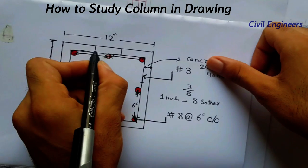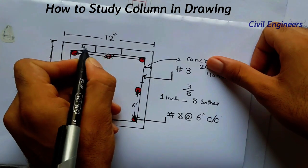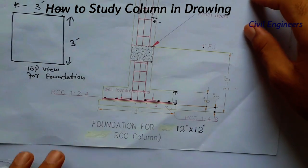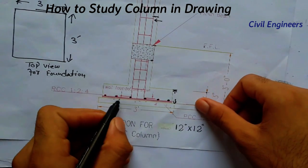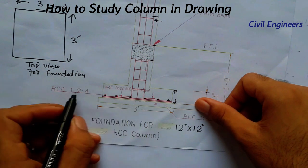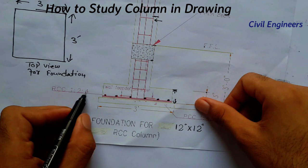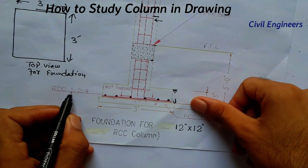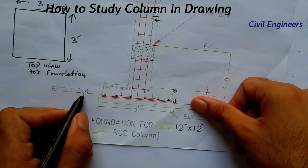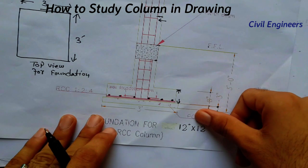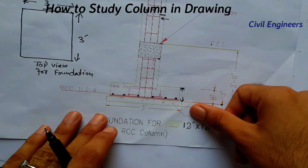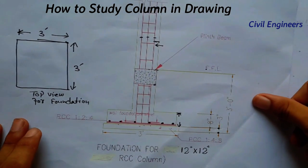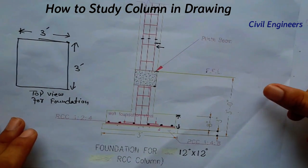In this section we also have RCC 1:2:4, which means M15 grade of concrete. Grade M15 means 15 Newton per mm² — this is the compressive strength of the concrete. That is the topic for today: how to study a column in civil engineering drawing.